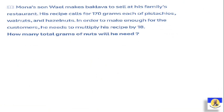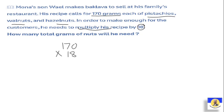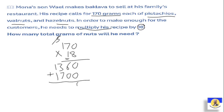Next question: Mona's son Wail makes baklava to sell at his family's restaurant. His recipe calls for 170 grams each of pistachios, walnuts, and mixed nuts. In order to make enough for the customers, he needs to multiply his recipe by 18. So how many total grams of nuts will he need? We do 170 multiplied by 18: 8×0=0; 8×7=56, write 6 carry 5; 8×1=8 plus 5=13. Then for the tens digit: put 0 first; 1×0=0; 1×7=7; 1×1=1. Then make plus: 0, 6, 3 plus 7=10, write 0 carry 1, giving 3.